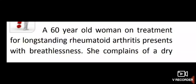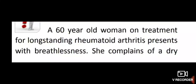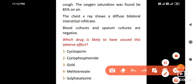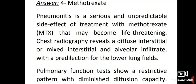A 60-year-old woman on treatment for long-standing rheumatoid arthritis presents with breathlessness. Oxygen saturation is found to be 85% on air. Chest X-ray shows diffuse bilateral interstitial infiltrate. Blood cultures and sputum cultures are negative. The drug likely to have caused this adverse effect is methotrexate. Pneumonitis is a serious and unpredictable side effect of methotrexate that may become life-threatening. Chest radiography reveals diffuse interstitial or mixed interstitial/alveolar infiltrate in the lower lung fields.